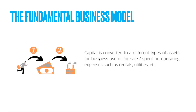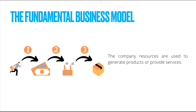Next, capital is converted to different types of assets for business use, for sale, or spent on operating expenses such as rentals, utilities, and so on. The cash invested by the owner will now be used to purchase certain assets, and these assets will be used in operations — either to create a product or to maintain the business. Next, the company's resources are used to generate products or provide services.